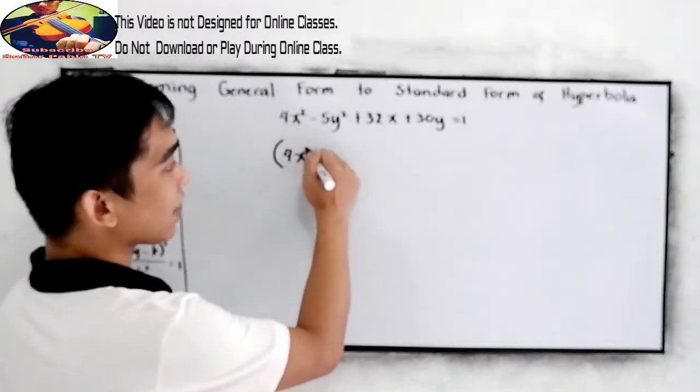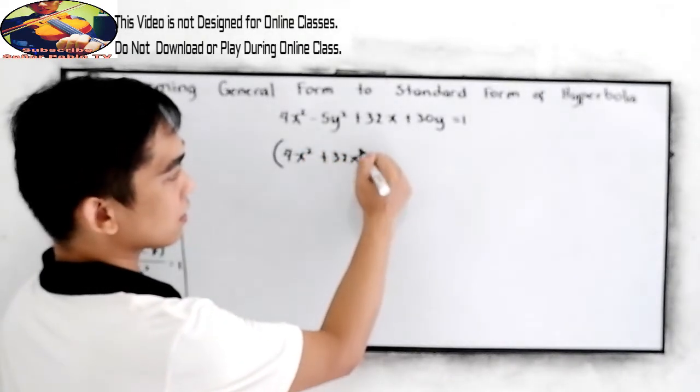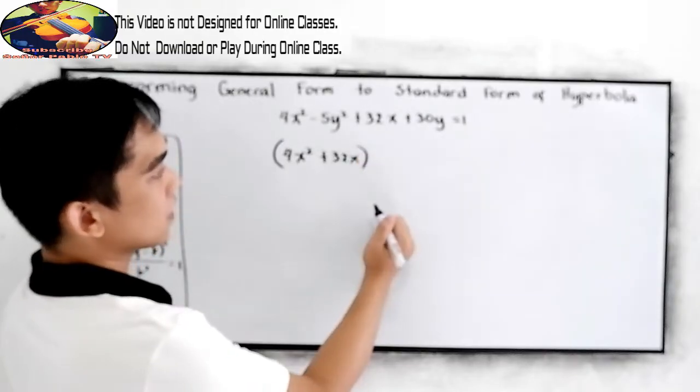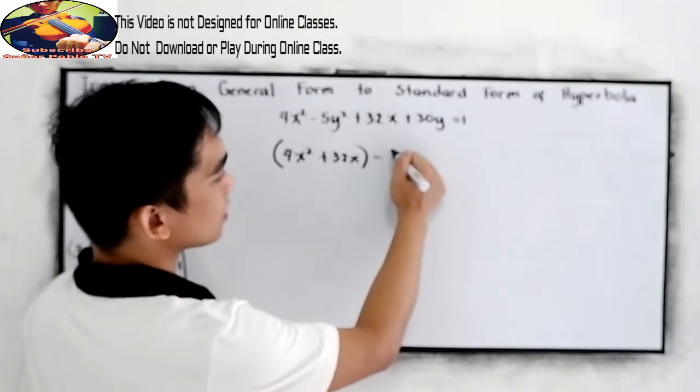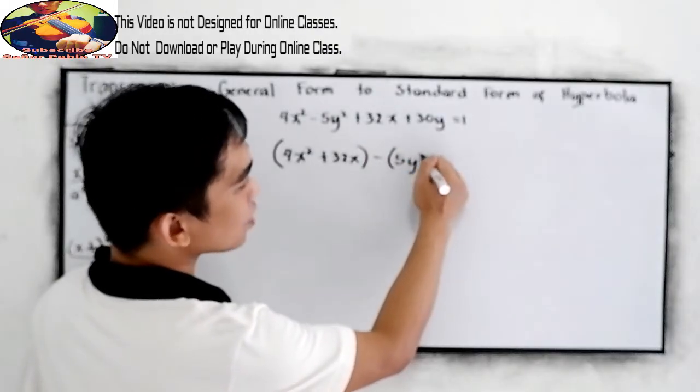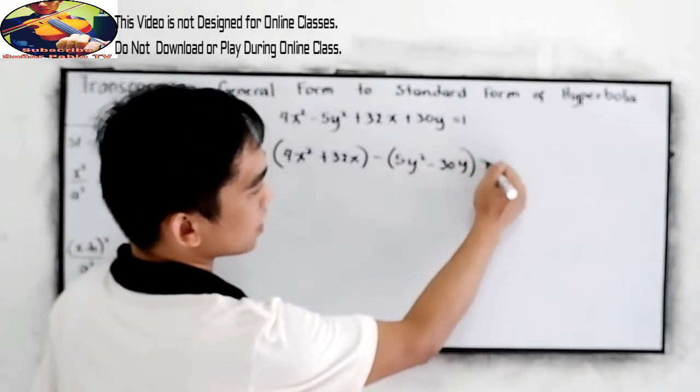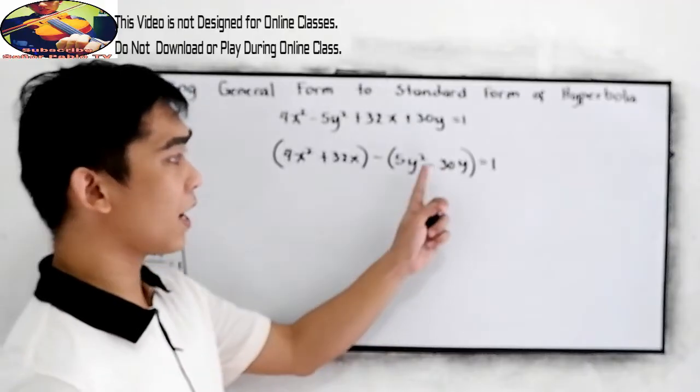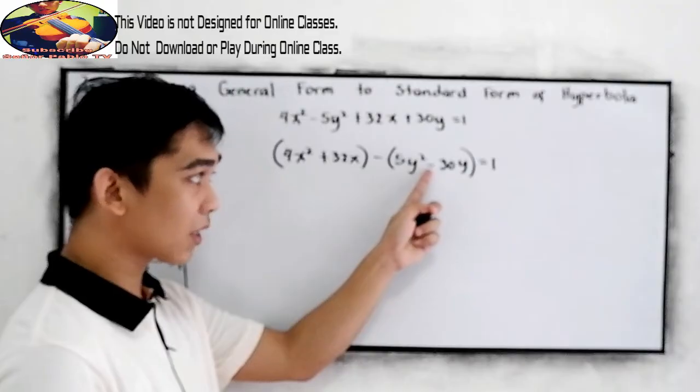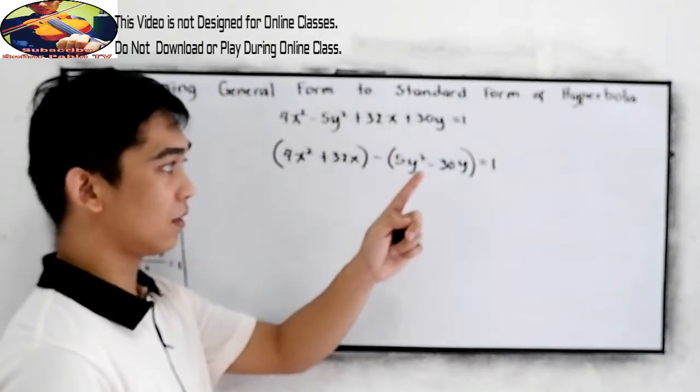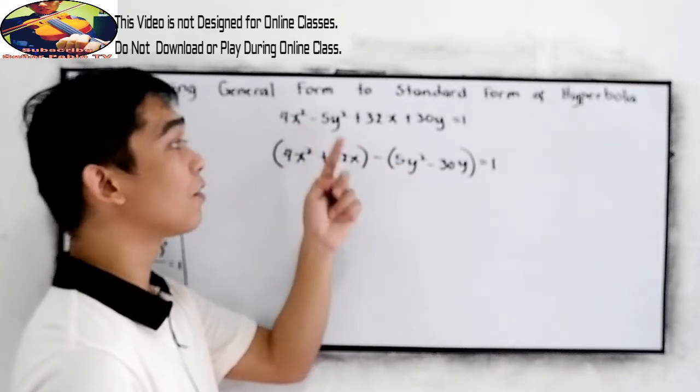So, we have 4x squared plus 32x. Now, we have negative 5y squared plus 30y is equal to 1. Why it became negative 30? Because negative times negative is positive 30, and negative times positive 5 is negative 5.